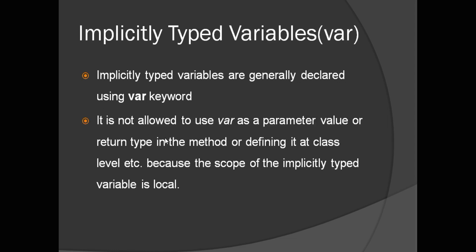It is not allowed to use 'var' as a parameter value or return type in any method, and you cannot define it at the class level, because the scope of an implicitly typed variable is local only. Let's understand all this with a practical example.